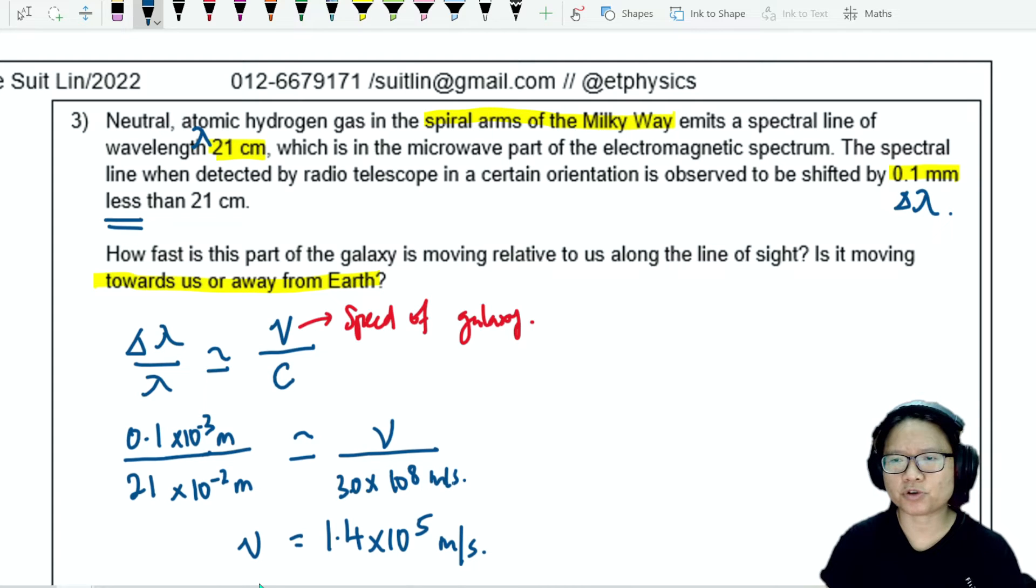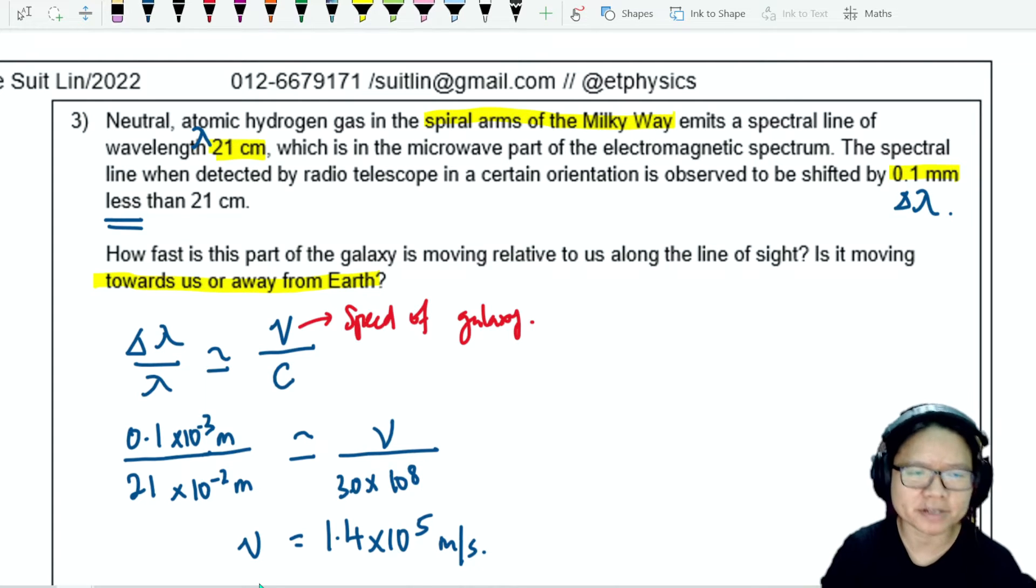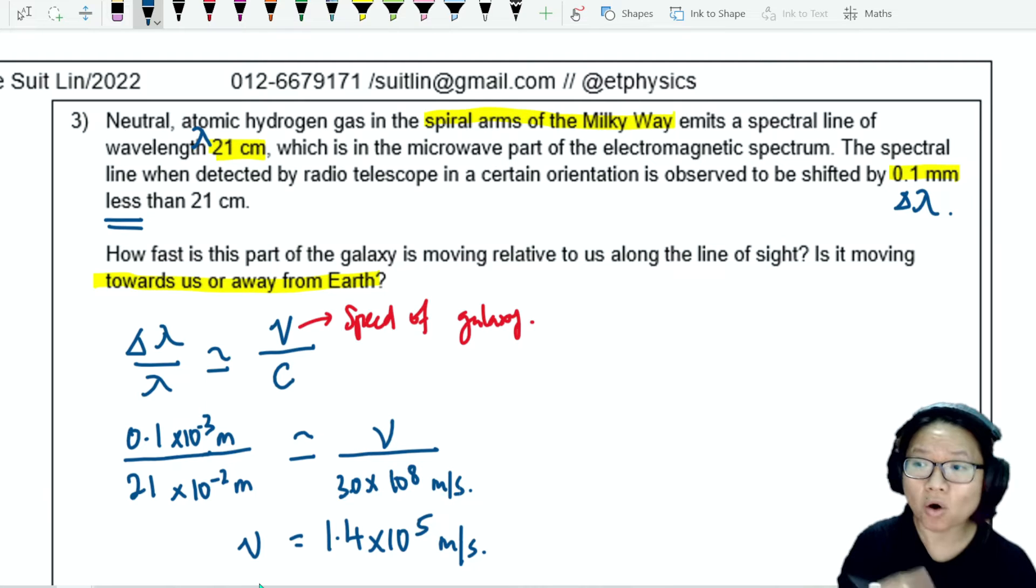After consulting my calculator, the value of V is 1.4 times 10^5 meters per second, because this 3 times 10^8 is meters per second. I'm done with the first part, but I haven't answered the second part yet.